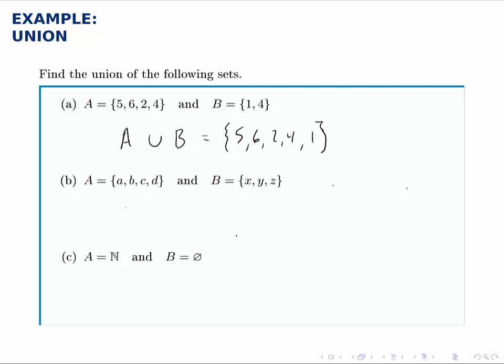Similarly, for part B, A union B, we write a set, start with the elements from A, and then add any from B that you need to. Well, we don't have X, Y, or Z, so we'll add all three of those.